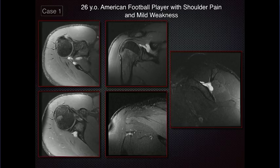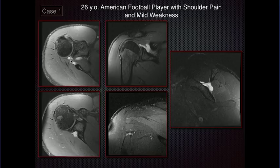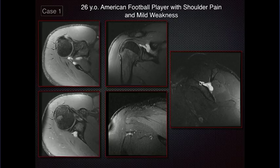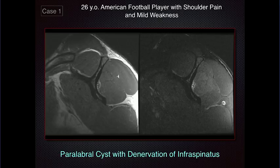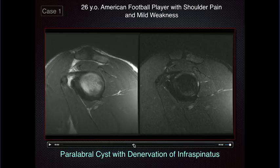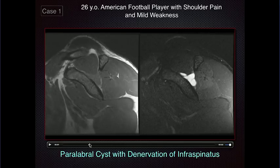Here's a football player who had shoulder pain and mild weakness. We could see a multilobular cystic structure along the glenoid — a paralabral cyst sitting in the spinoglenoid notch of the scapula. You can see mild hyperintensity occurring in the infraspinatus muscle — some denervation change because this cyst is pushing on the branch of the suprascapular nerve that goes to the infraspinatus. As I scroll through, you can see the cyst along that spinoglenoid notch and the hyperintensity in the infraspinatus muscle.